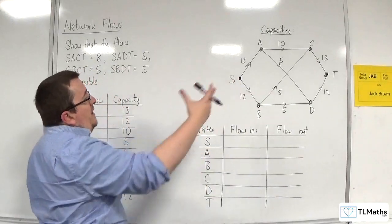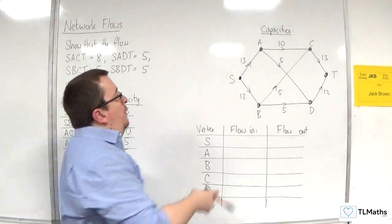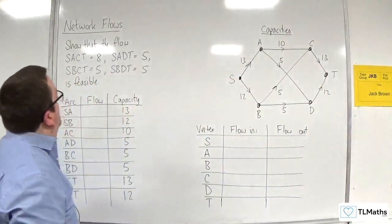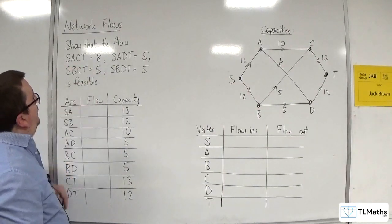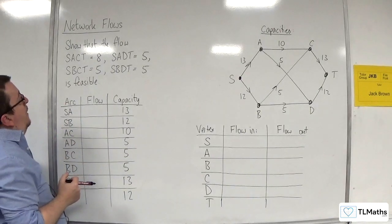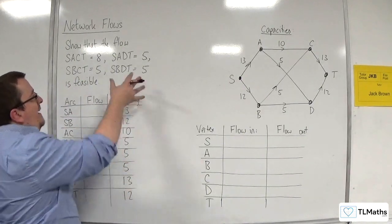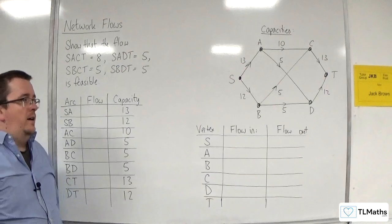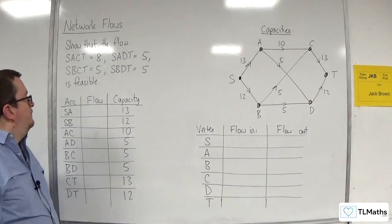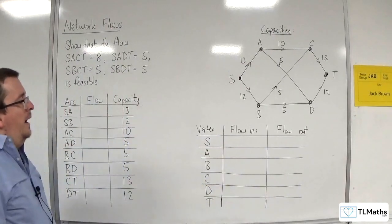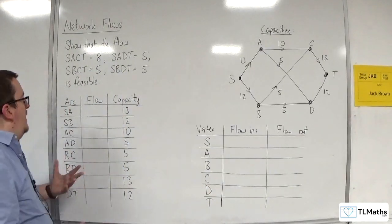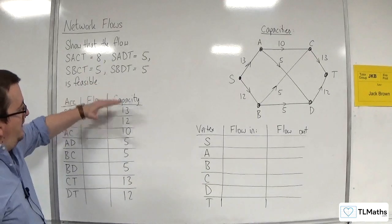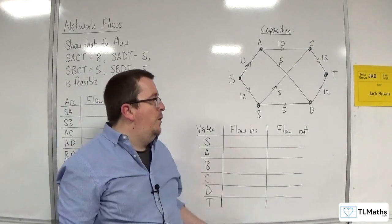In this video, we have this network which shows the capacities of each edge, where we've got the source S and the sink T. What we need to do is show that the flows SACT=8, SADT=5, SBCT=5, and SBDT=5 are feasible — meaning all of those flows going through the network are feasible altogether. We're going to fill out these two tables to check that flows don't go over the capacities, and that the flow in is equal to the flow out.